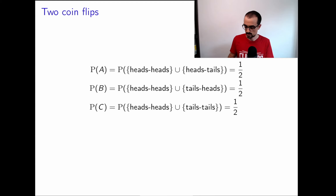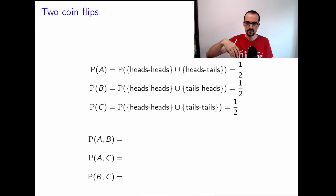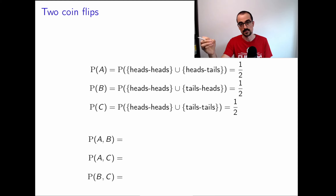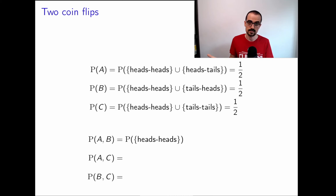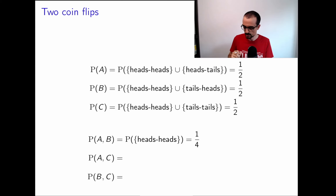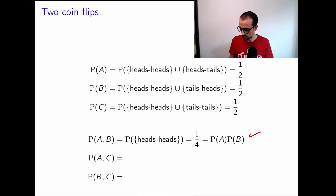Now let's look at the intersections. The intersection of A and B — first coin heads and second coin heads — only happens for outcome HH, so P(A∩B) = 1/4. This equals (1/2)·(1/2), so A and B are independent. Which makes sense — under our probability measure, the two coins are not related.